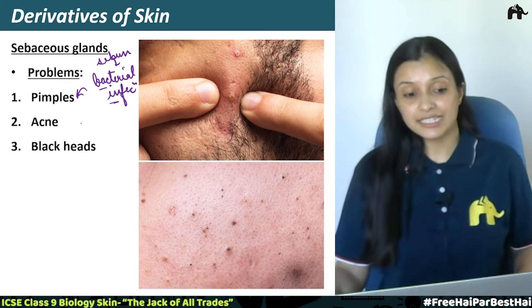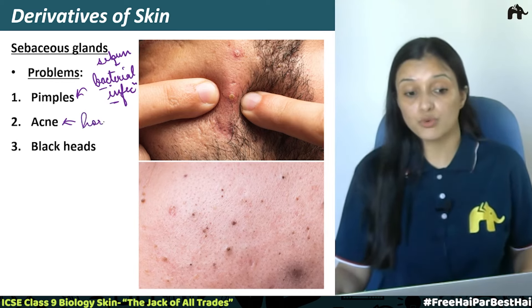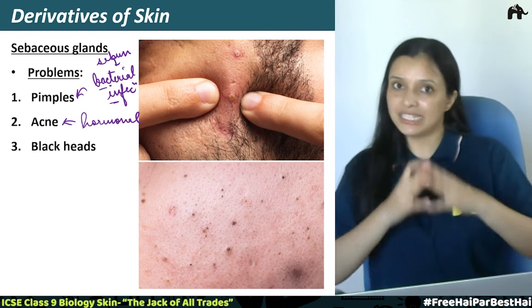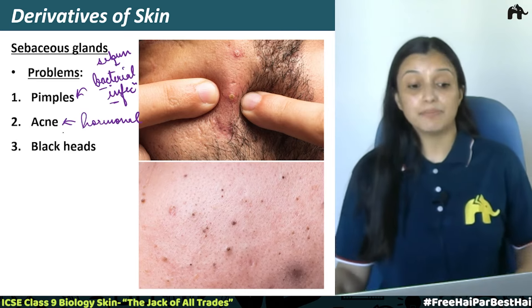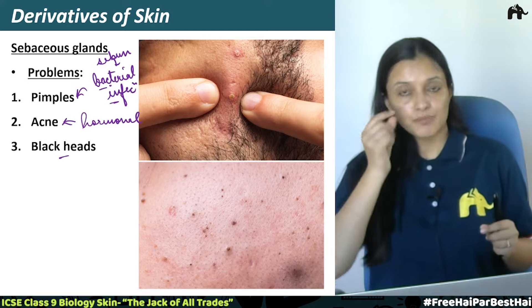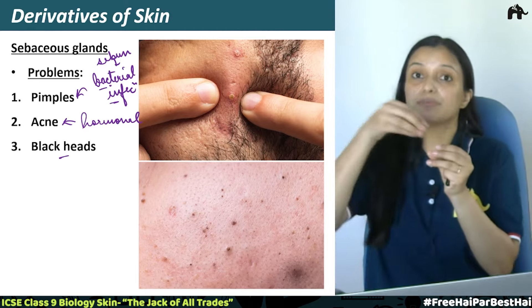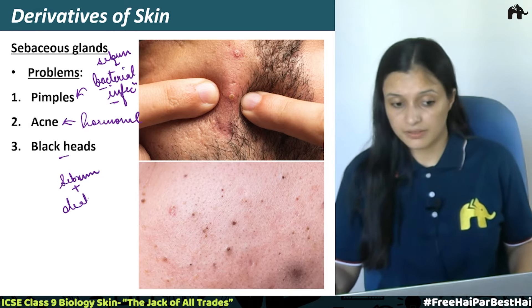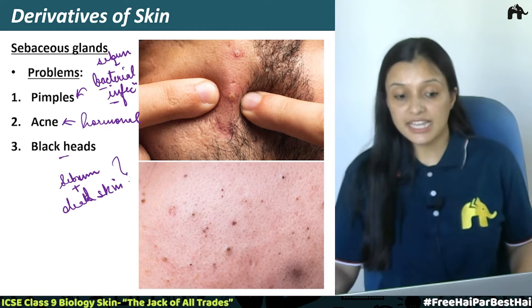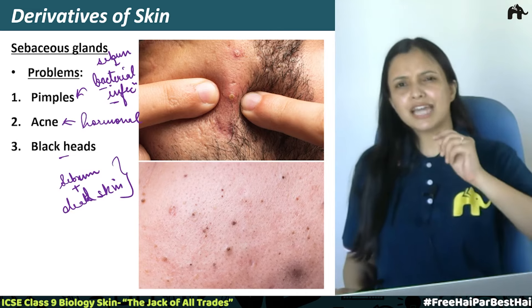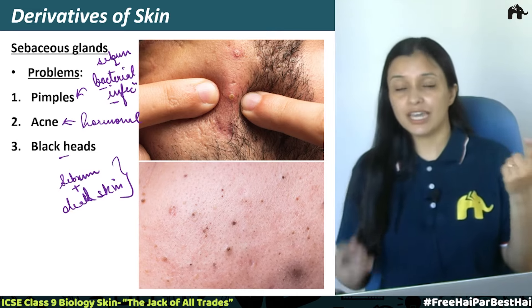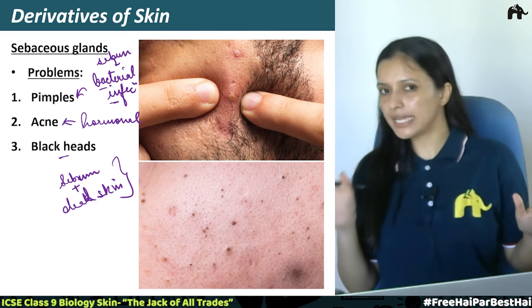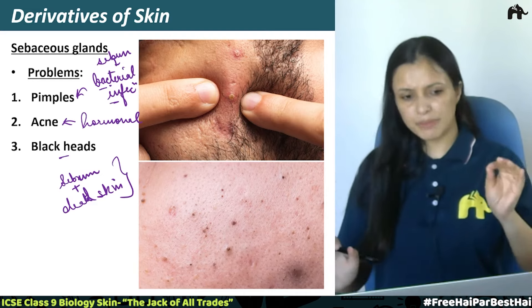Acne is very common in teenagers because of hormonal influence — when hormones change in our body, we see acne. Blackheads form when dead skin and sebum accumulate in a particular place; the oxidation of this sebum and dead skin forms a dark structure — a blackhead — visible on the face. So pimples and blackheads are related to sebaceous gland secretion. To avoid pimples and blackheads, keep your skin clean; acne may still happen during teenage years due to hormonal changes.